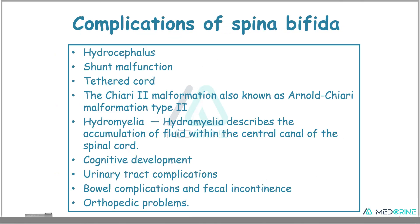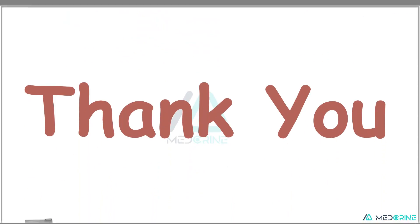What are the complications associated with Spina Bifida? Spina Bifida can be associated with hydrocephalus, shunt malfunction, tethered cord, Chiari 2 malformation (also known as Arnold-Chiari malformation type 2), hydromyelia — where there is accumulation of fluid in the central canal of the spinal cord — cognitive developmental issues, urinary tract complications due to compromise of the nerve supply to the urinary tract, bowel complications and fecal incontinence, and orthopedic problems. Thank you very much.